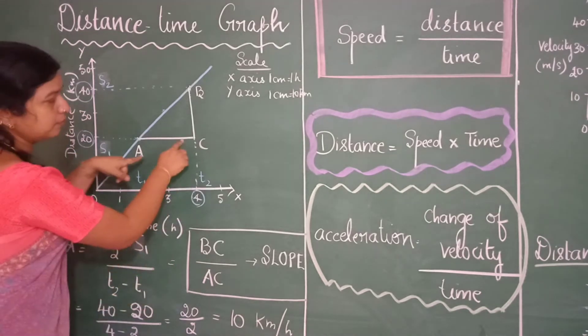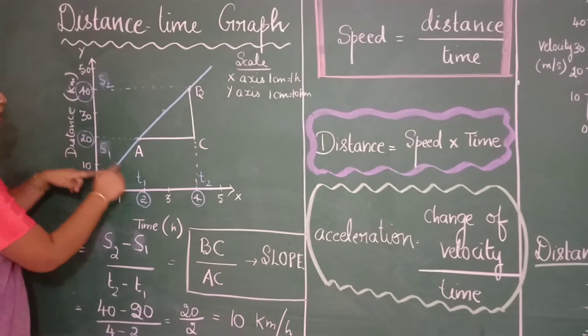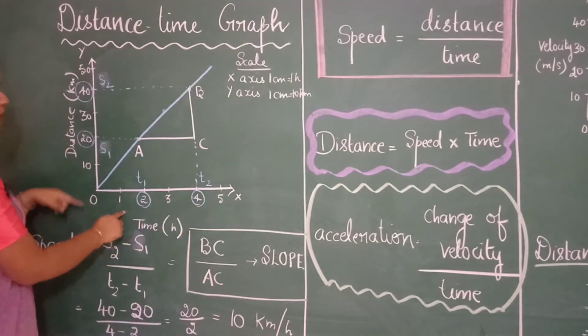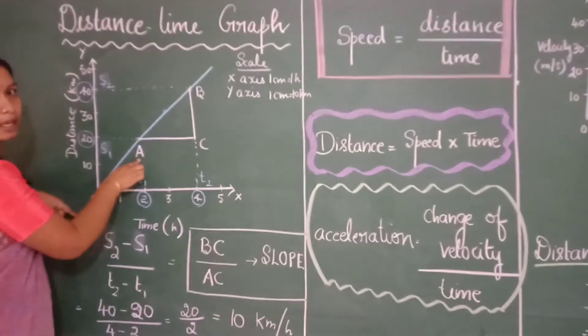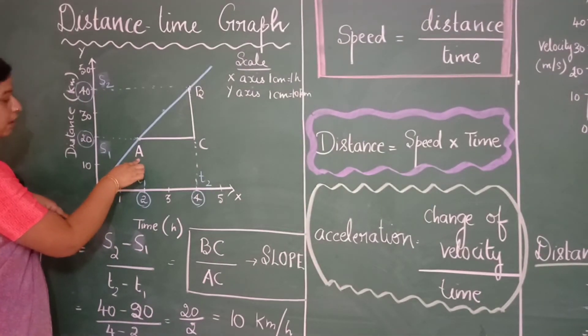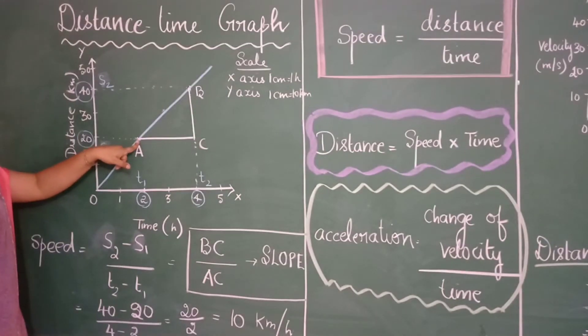And remember when you were calculating speed we used s2 minus s1 by t2 minus t1. If you see here this was the initial distance which the object has covered in time t1. We are just marking it using the point a.